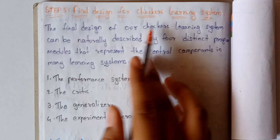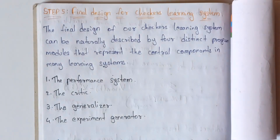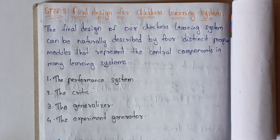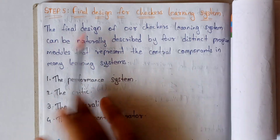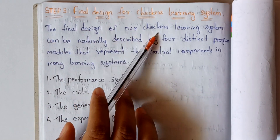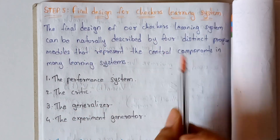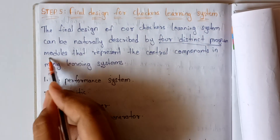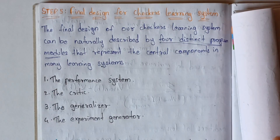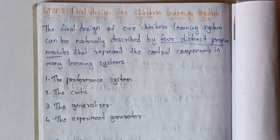In this last step, we are going to design the final design for the checkers learning system. The final design of our checkers learning system can be naturally described by four distinct program modules that represent the central components in many learning systems.